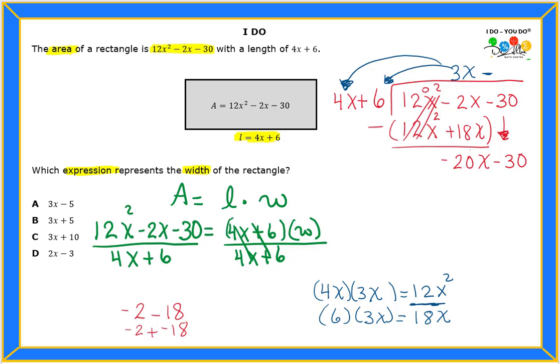4x times what gives me a negative 20? I'm going to write it down here on the right: 4x times what gives me a negative 20x? Think about 4 times what gives you a negative 20. It has to be a negative 5. And that would be my negative 20. I already have an x, so that's not needed. So that's going to give me a minus 5 up here.